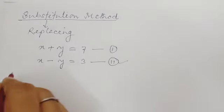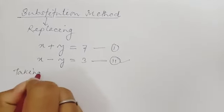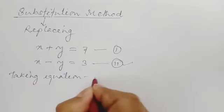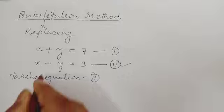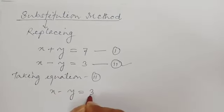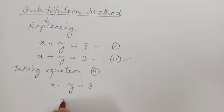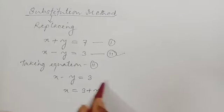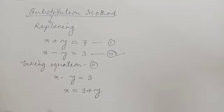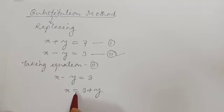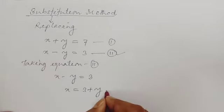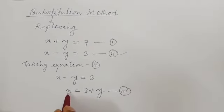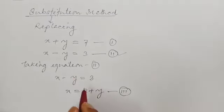I'm taking equation 2. So x minus y equal to 3 — this is equation 2. So x will be equal to 3 plus y, when we transpose y to the right-hand side. So x equal to 3 plus y. Take this as equation 3. We have now found the value of x from equation 2.